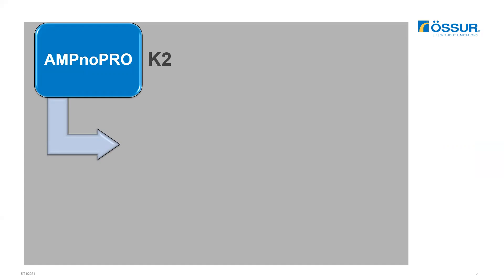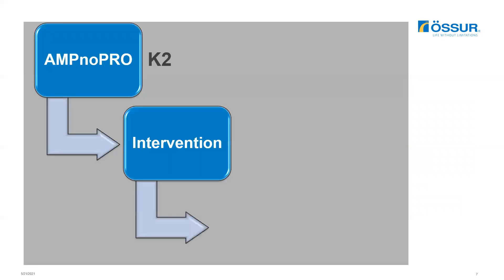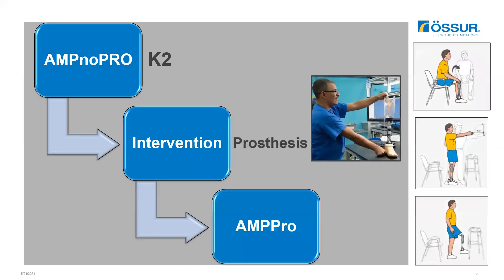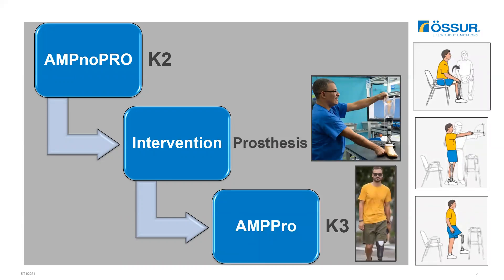The AMP doesn't predict his outcome — it can only predict what his current functional level is, so he might be a K2. He goes through the fitting process and he is comfortable with his prosthesis. You retest him at the conclusion of the fitting process with his new prosthesis, and now his score indicates his functional level is K3. What made the difference for him to move from K2 to K3? Your intervention — the prosthesis.